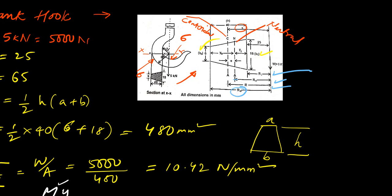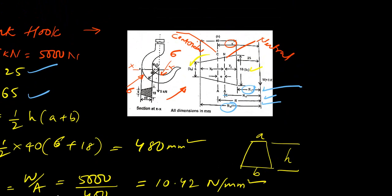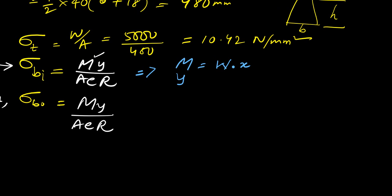These values are required just to substitute in the equation. If you understand the diagram, it will be easy to solve this type of question. M is the bending moment, equal to load times distance x, where x is the distance from the centroidal axis to the line of loading. y_i is the distance from the neutral axis to the inner surface, and from the diagram: y_i = rn − ri.